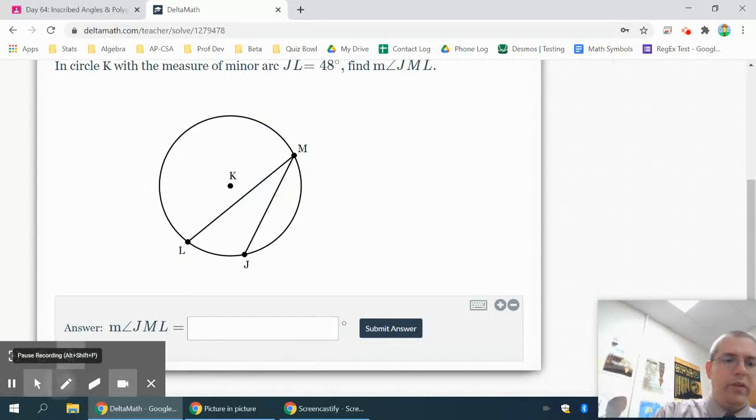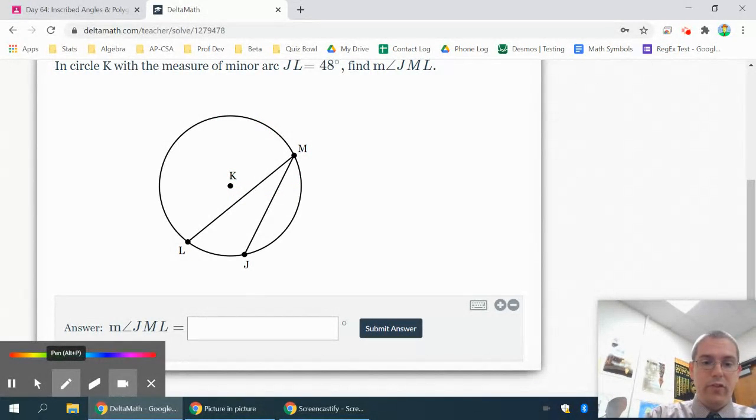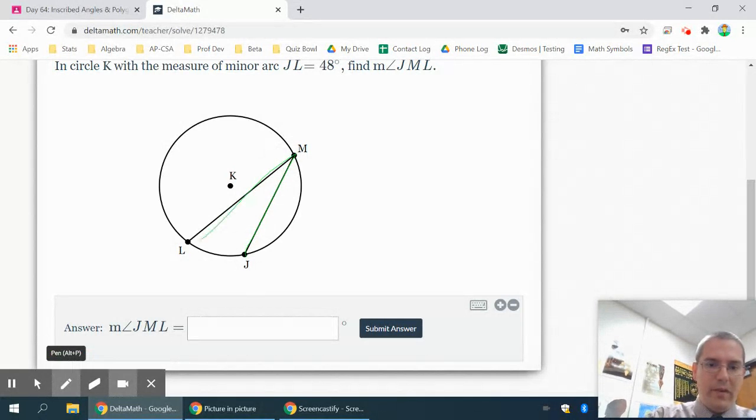Okay, so once again when they name the angle JML, it starts at J, goes to M, then to L. So this is an inscribed angle that's on the edge of the circle, and it tells you that in this case the arc is 48, and it wants to know this angle up here. Well since this is inscribed, the last one was a central angle, an angle in the middle.